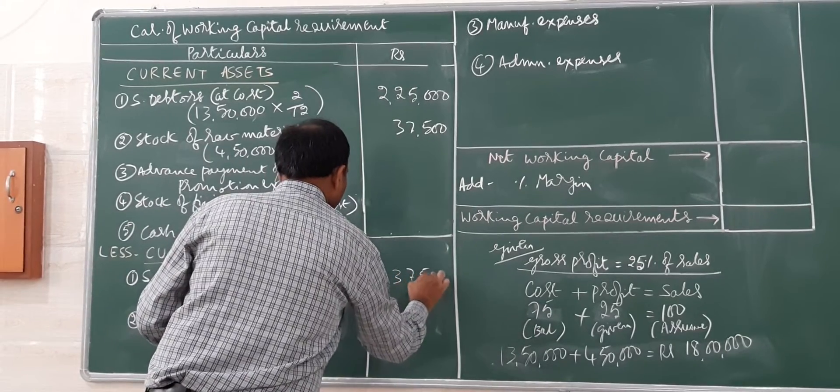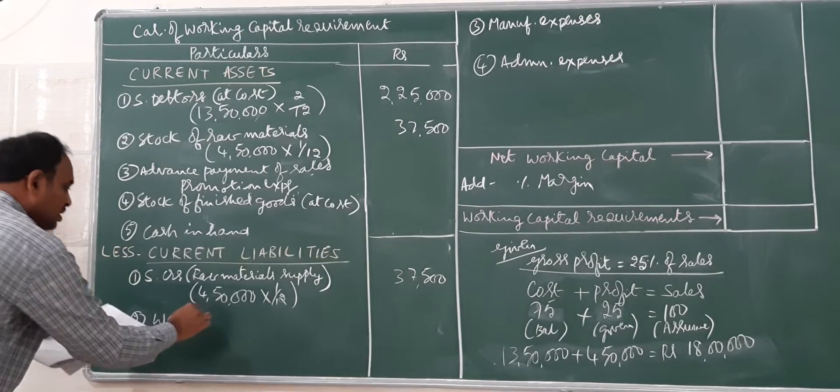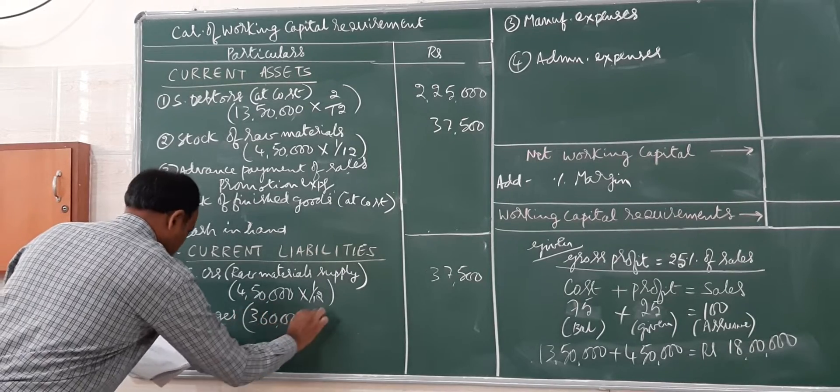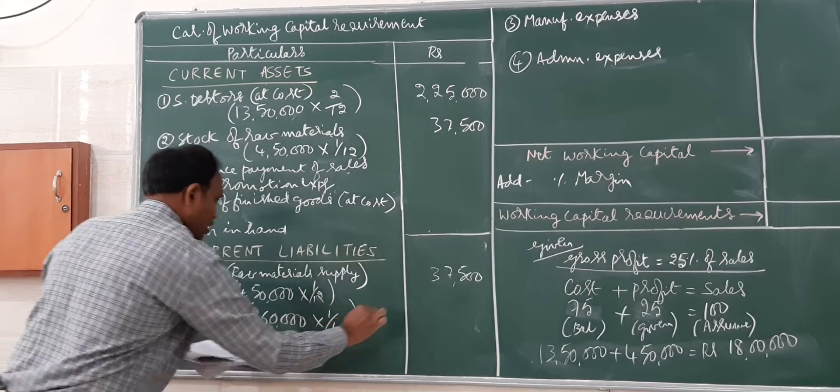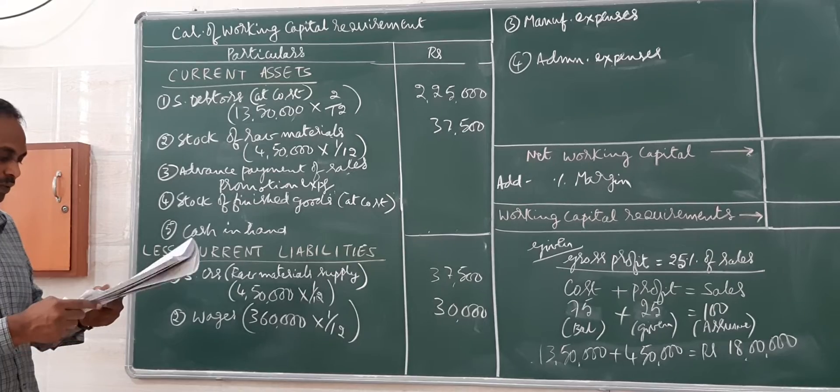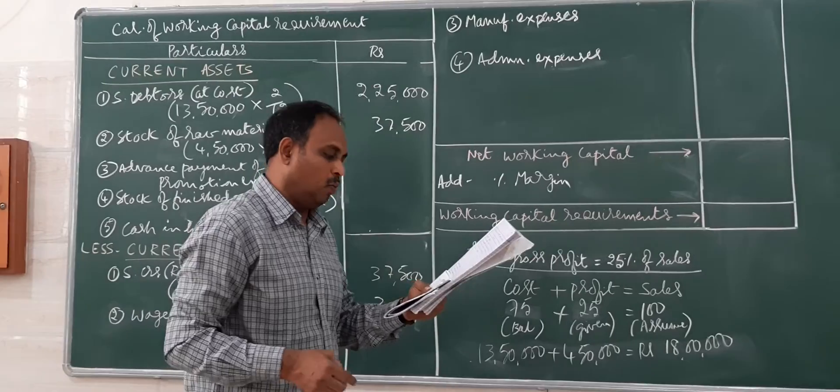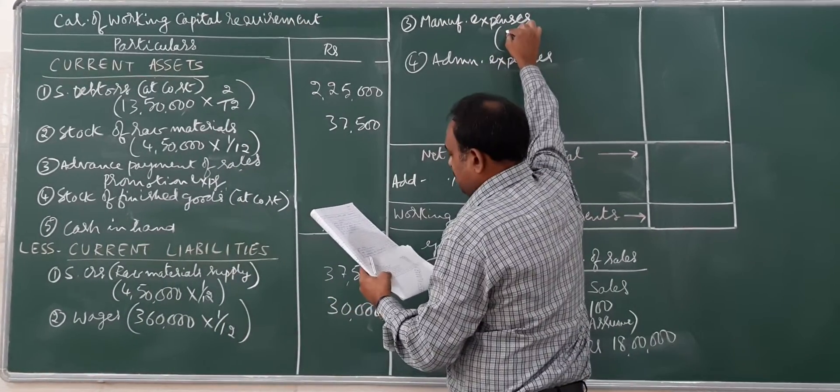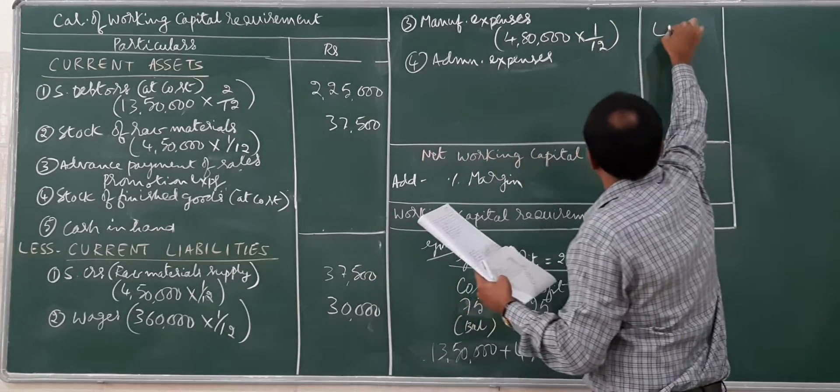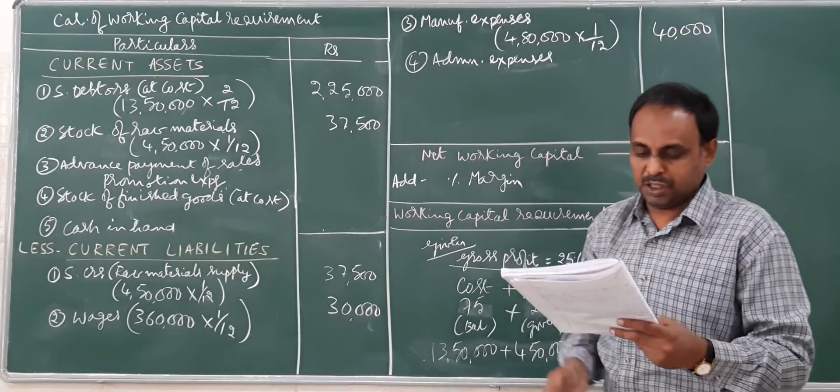Wages is a current liability: 3 lakh 60,000 into 1 month equals 30,000, clearly given as 1 month lagging period. Next is manufacturing expenses: 4 lakh 80,000 into 1 by 12, which comes to 40,000.